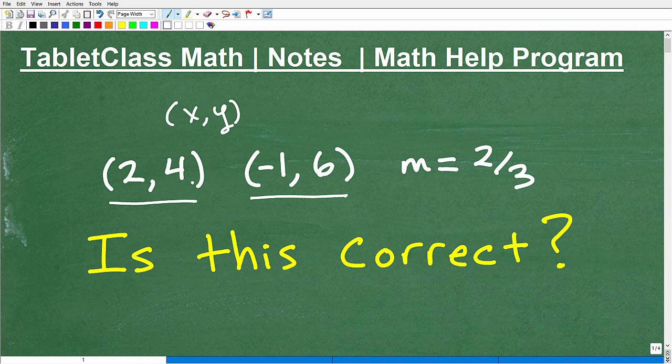But basically there's two points we can plot and we want to know if the slope is 2/3. Let's suppose somebody is taking a little quiz on finding the slope of a line and they say, well, I calculated the slope here as being 2/3. So is this correct? Well, it could be correct, but it could be wrong. We just don't know.